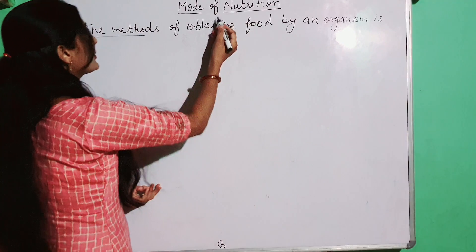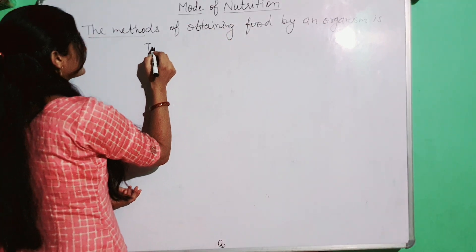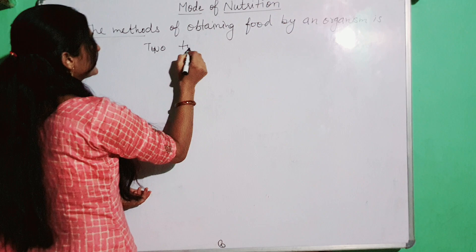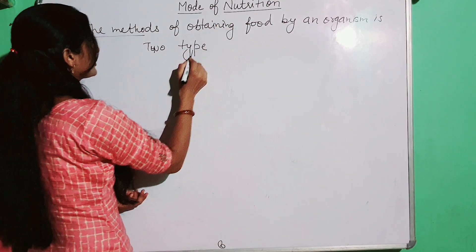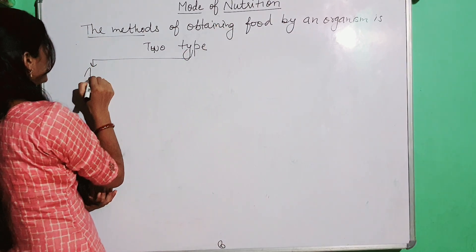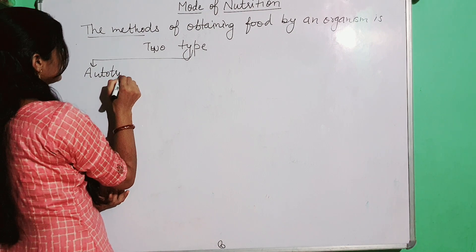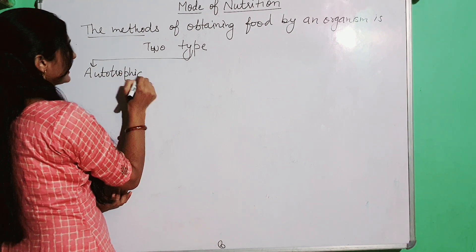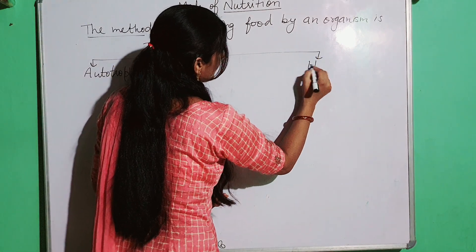Mode of nutrition mainly is of two types. The first is autotrophic, and the second one is heterotrophic.